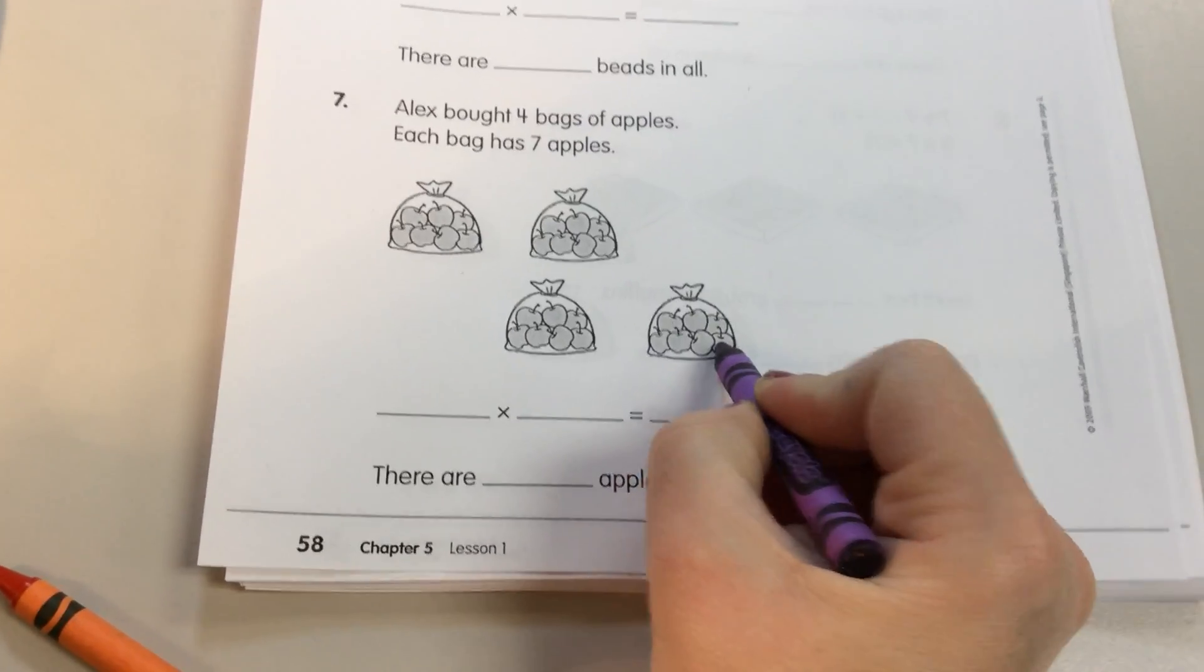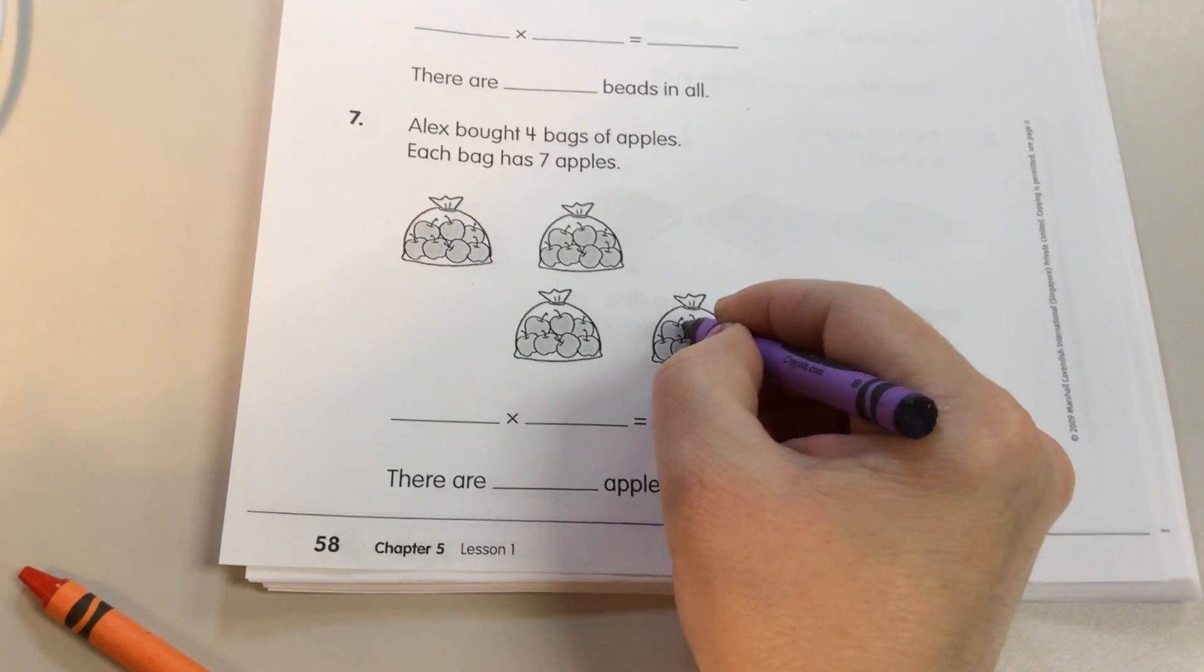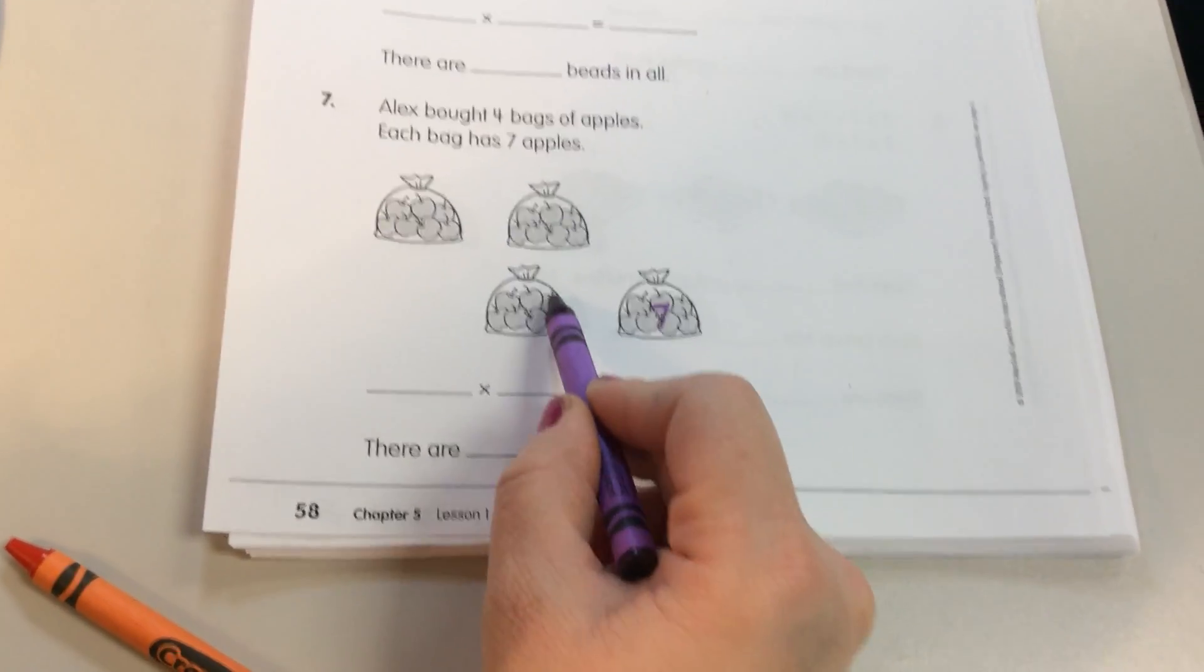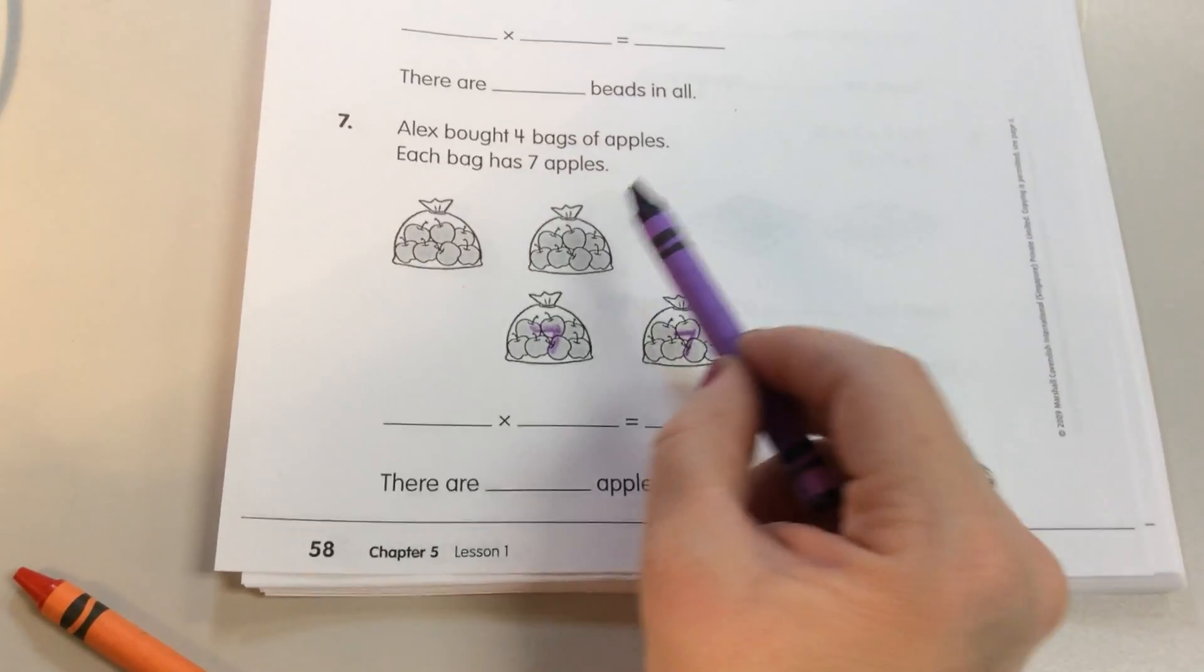We see one, two, three, four, and three more makes seven. Okay, so I'm going to put seven here. Now, four and three more makes seven. Seven apples, you're right.